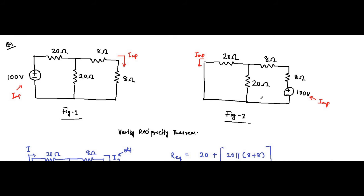As per the question, the 100-volt voltage source is shifting to the third branch. So we will now proceed to the second circuit and find the current in the first branch with respect to the voltage source present in the third branch. If these two currents are equal, then the reciprocity theorem is verified.